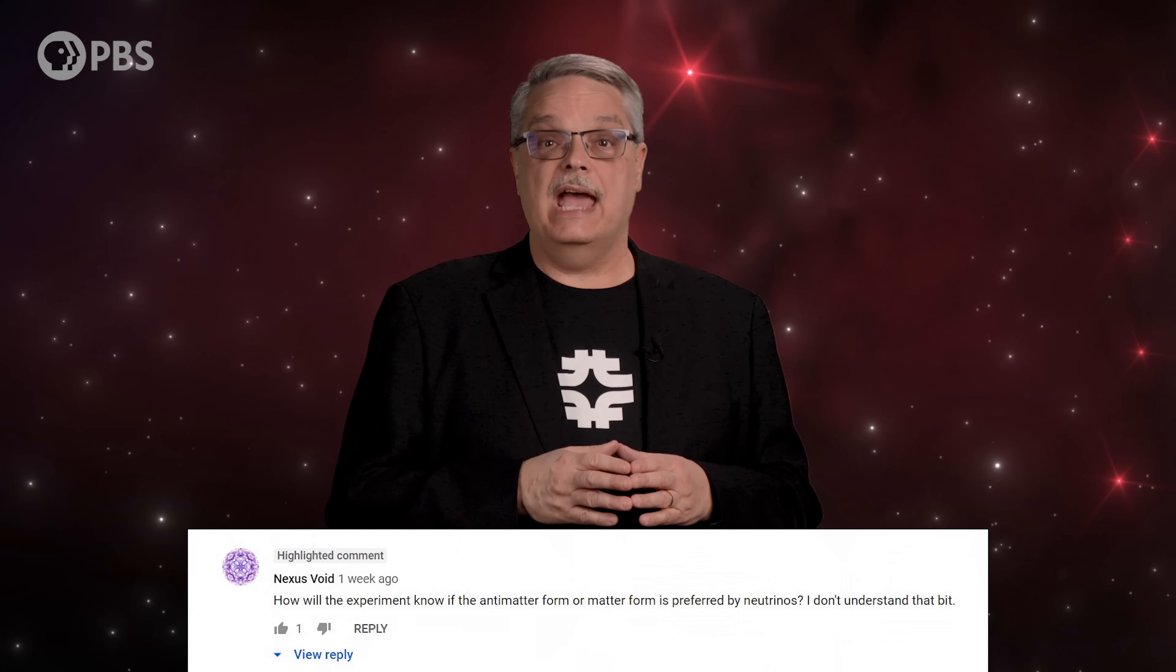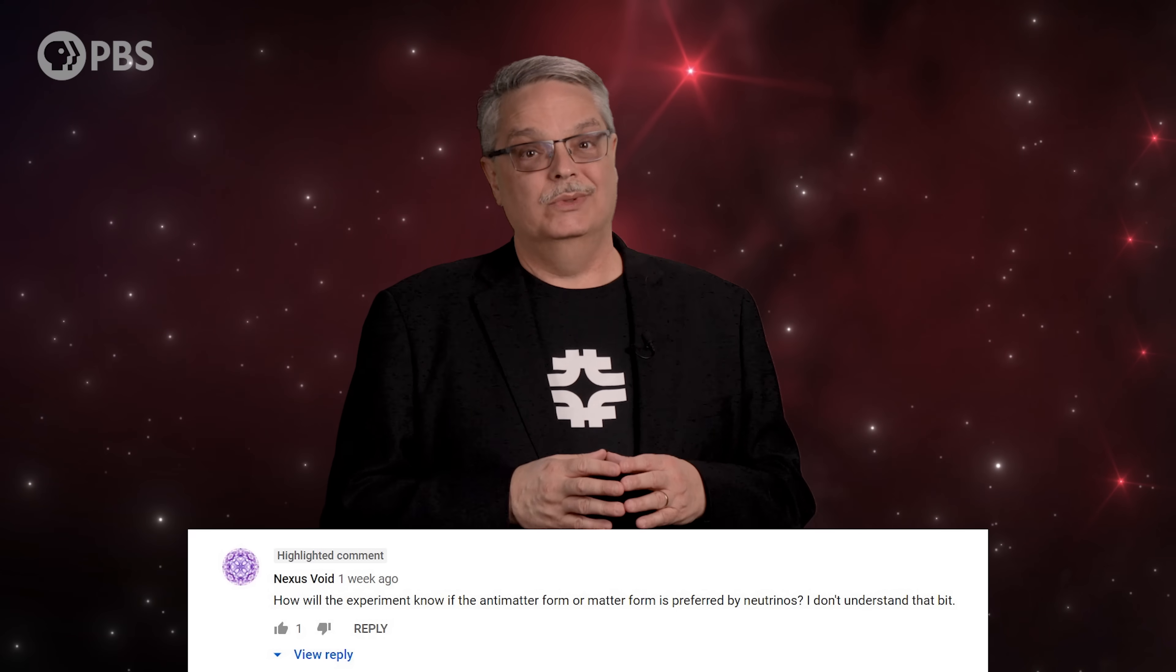Nexus Void asks how we'll learn if neutrinos prefer to interact with matter or antimatter. Actually, what we'll do is a little different. We want to see if matter or antimatter neutrinos change their identity at different rates. We do that by performing the experiment with a beam of neutrinos, and then repeating it with a beam of anti-neutrinos. If they're different, we may be onto something.